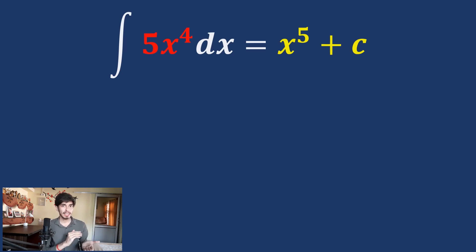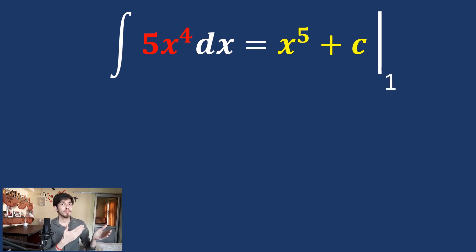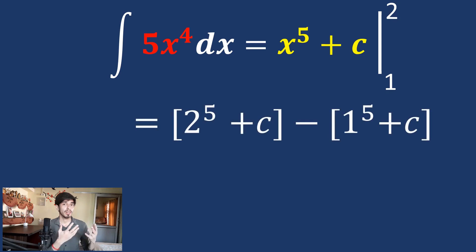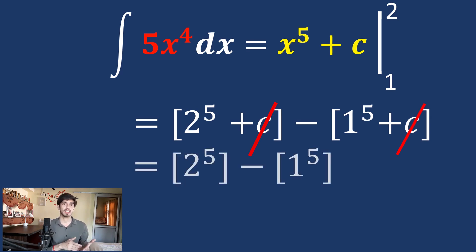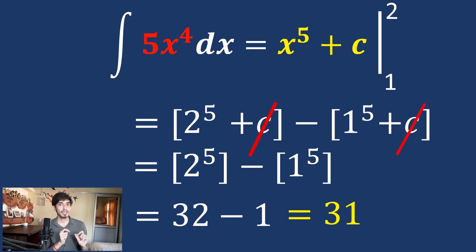To find the area, we write x⁵ + c with a vertical bar, writing the lower limit 1 at the bottom and the upper limit 2 at the top. It is evaluated as the upper limit minus the lower limit: we substitute 2 to get 2⁵ + c, minus substituting 1 to get 1⁵ + c. The constants cancel out, so in definite integration we do not write the constant c. This gives us 2⁵ − 1⁵ = 32 − 1 = 31. So 31 square units is the area bounded by the function 5x⁴ between x = 1 and x = 2. This integration with limits is called definite integration.